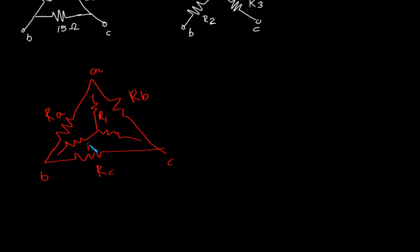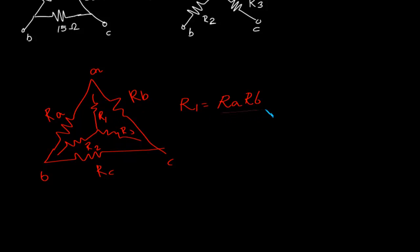To convert the delta into an equivalent Y network, we have the Y network like this. This is R1, this is R2, and this is R3. Now to find out R1, we will multiply the adjacent resistances — that means we multiply the adjacent resistances to find R1 — and divide it by the sum of resistances of the delta, that is Ra plus Rb plus Rc.